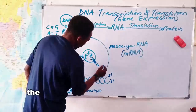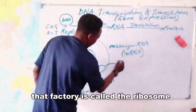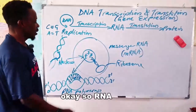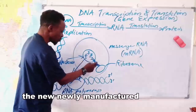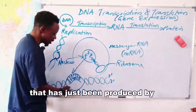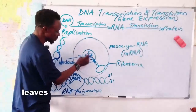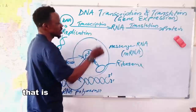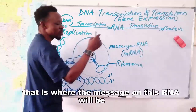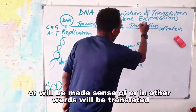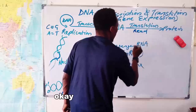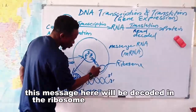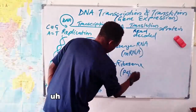The mRNA leaves with this message to the protein manufacturing factory in the cell. That factory is called the ribosome. The newly manufactured RNA produced by RNA polymerase copies the message and takes it to the ribosome. In the ribosome, that is where the message will be decoded — where the message on this RNA will be read, made sense of, or in other words, translated.